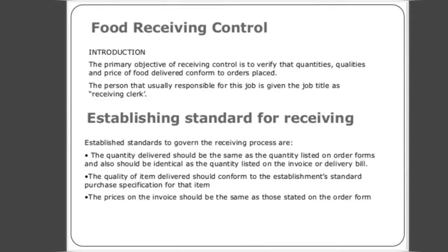Establishing Standards for Receiving. The established standards to govern the receiving process are: the quantity delivered should be the same as the quantity listed on order forms, and also identical to the quantity listed on the invoice or delivery bill. The quality of items delivered should conform to the establishment's standard purchase specification for that item. The prices on the invoice should be the same as those stated on the order form.